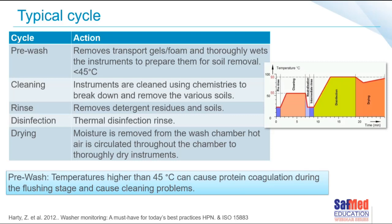The cleaning or wash phase is where instruments are cleaned using chemistries to break down and remove the various soils. In the rinse phase, detergent residues and soils are removed. The disinfection phase is a thermal rinse — a rinse at a specified temperature for a specified time to thermally disinfect the instruments, making them safer to handle. After that, the drying phase removes moisture from the washer chamber — hot air is circulated through the chamber to thoroughly dry the instruments. It is really very difficult to replicate this process in manual cleaning.